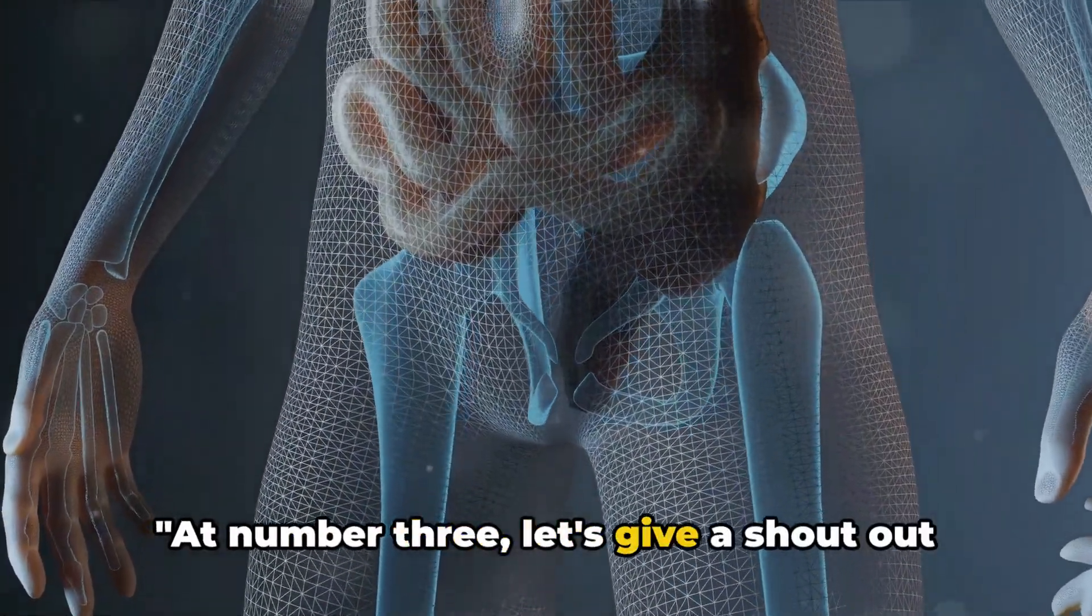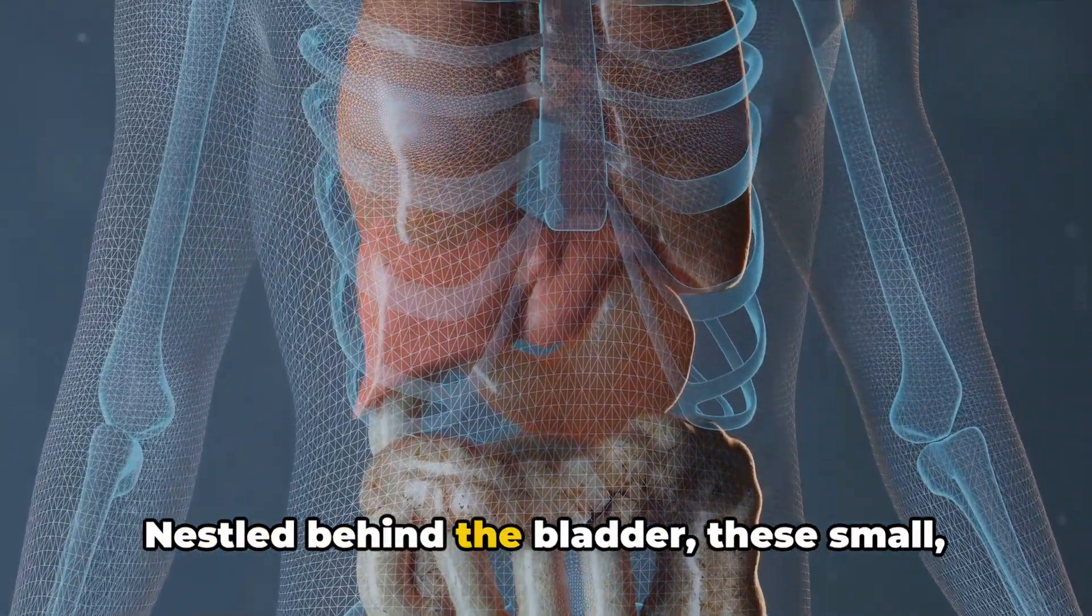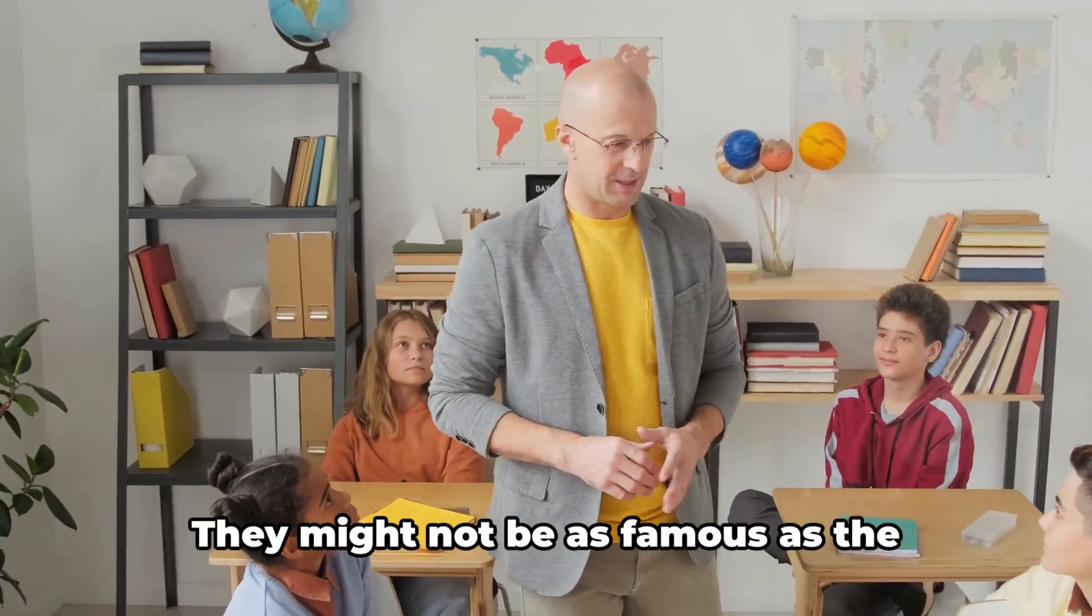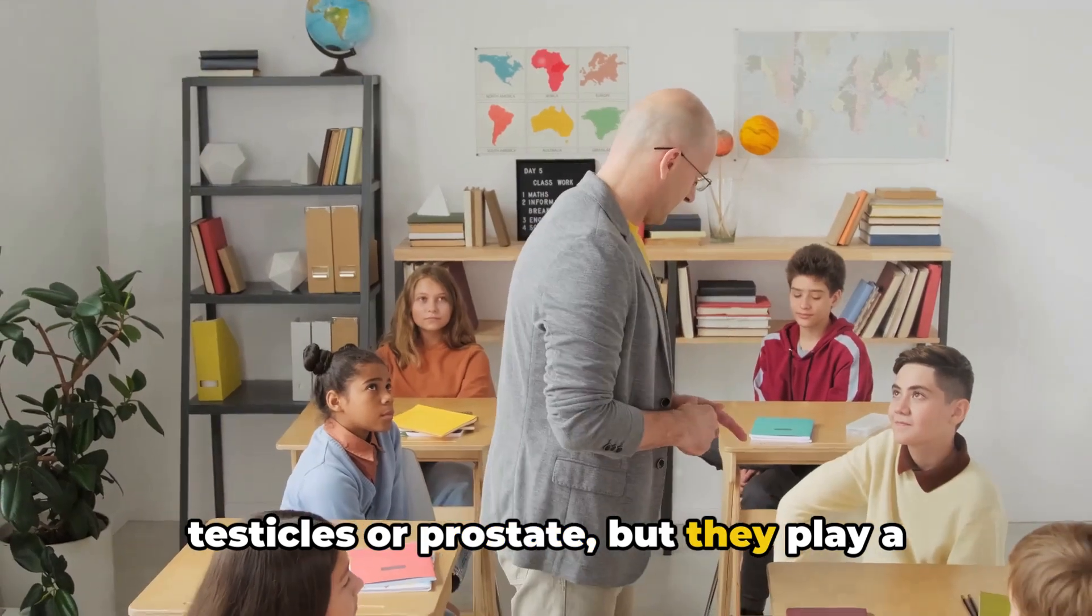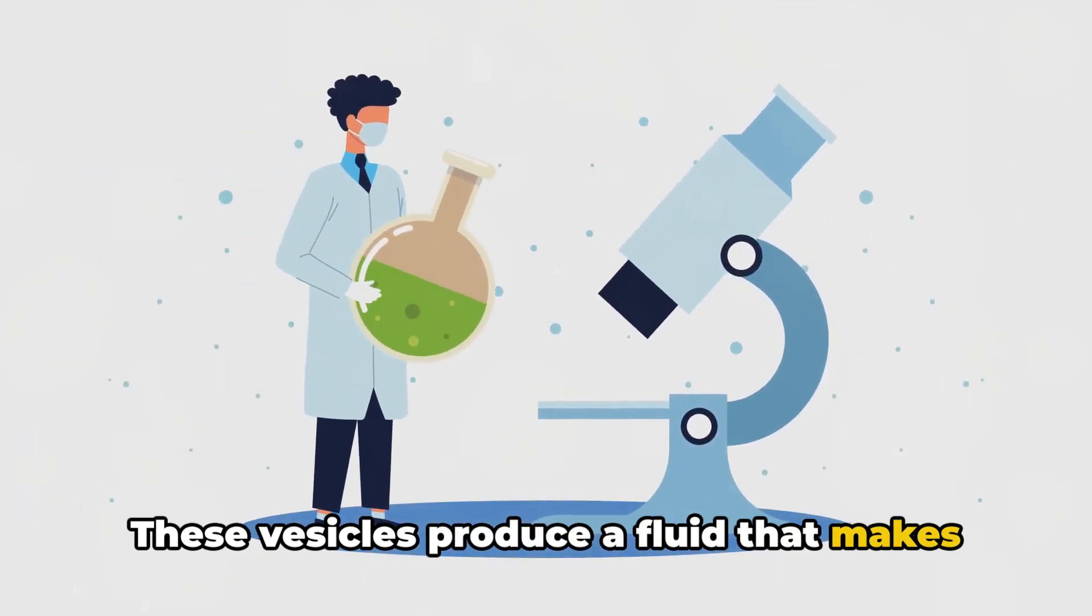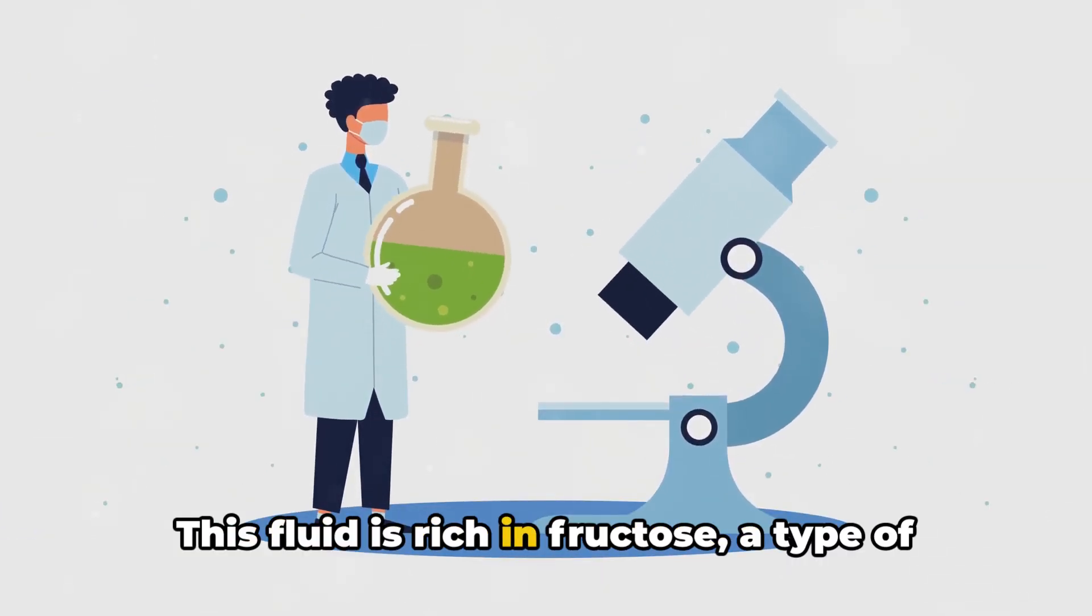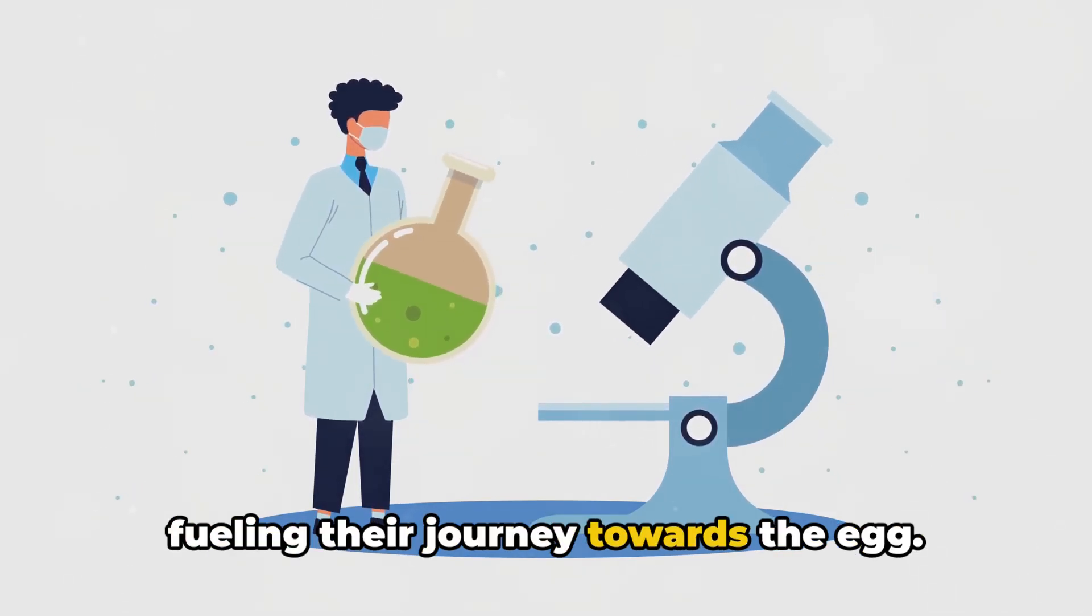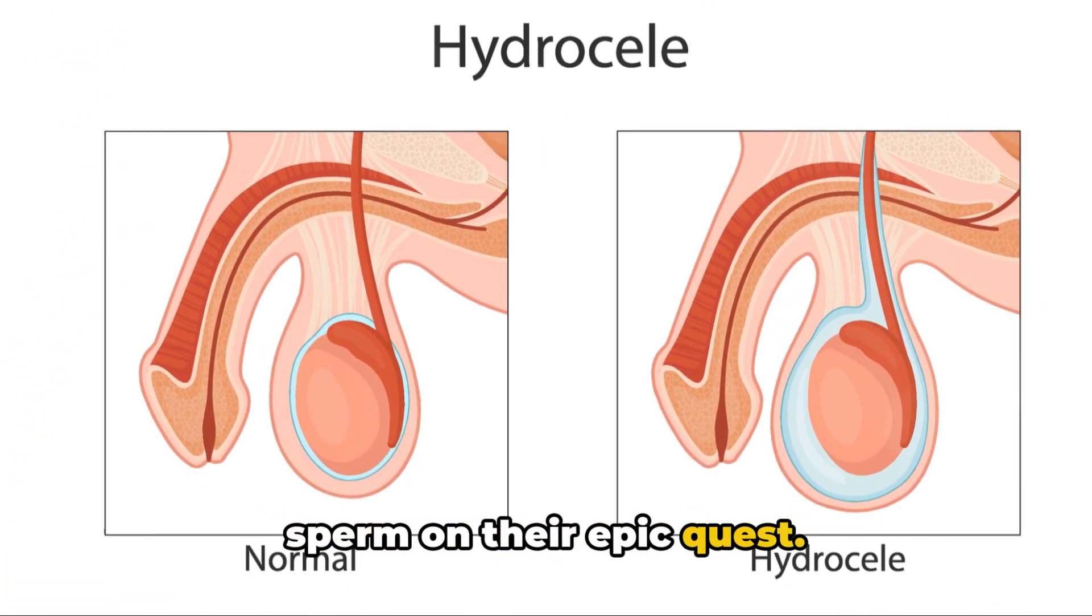At number 3, let's give a shout-out to the seminal vesicles and their crucial contribution. Nestled behind the bladder, these small spongy pouches are unsung heroes of the male reproductive system. They might not be as famous as the testicles or prostate, but they play a pivotal role in the story of reproduction. These vesicles produce a fluid that makes up around two-thirds of the volume of a man's ejaculate. This fluid is rich in fructose, a type of sugar that provides energy to the sperm, fueling their journey towards the egg. It's like a power-packed lunchbox for the sperm on their epic quest.